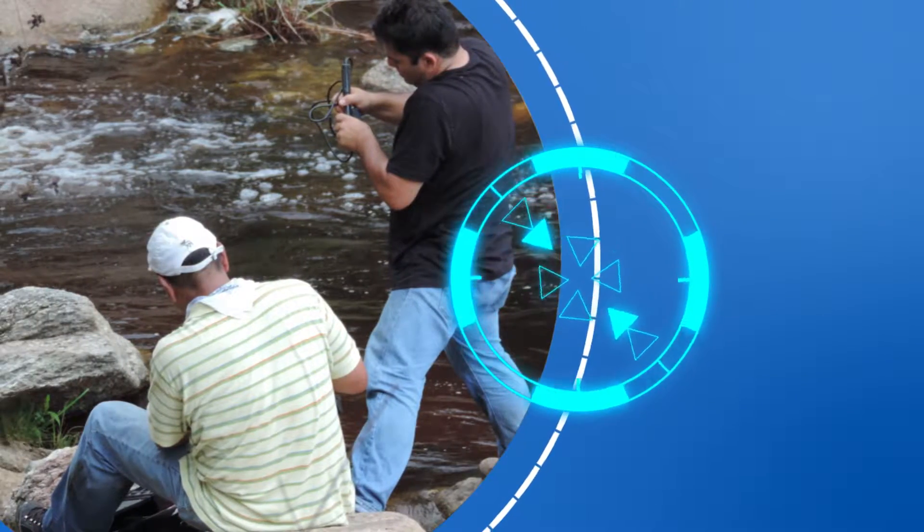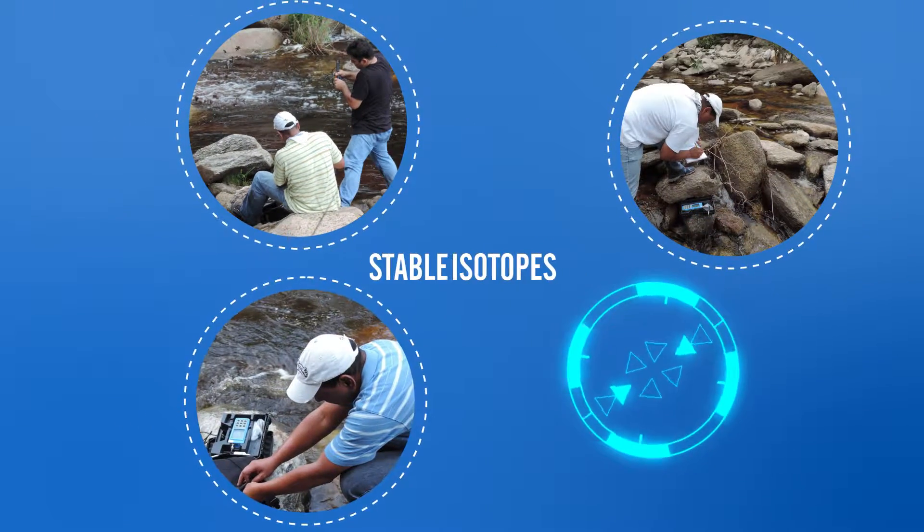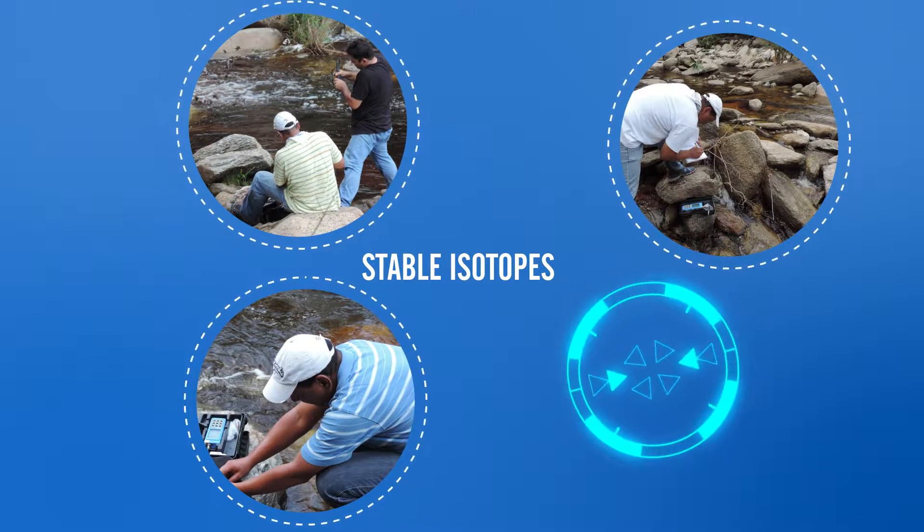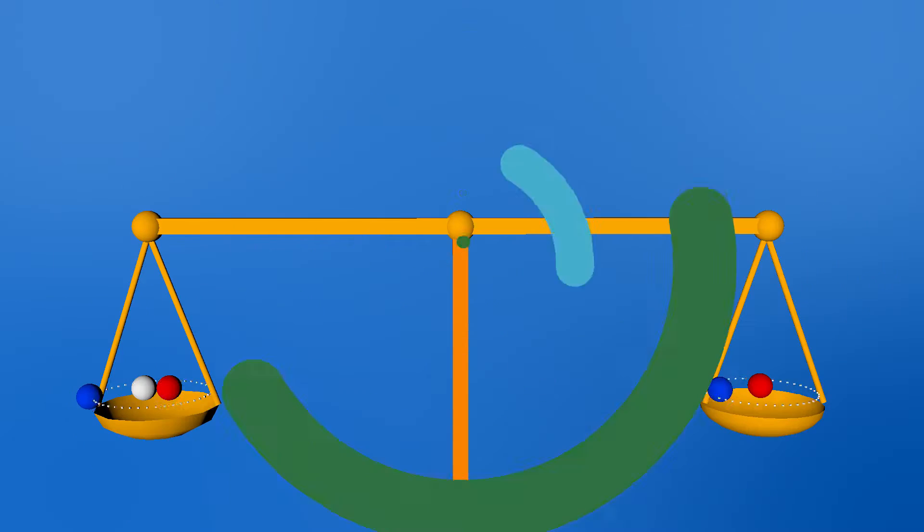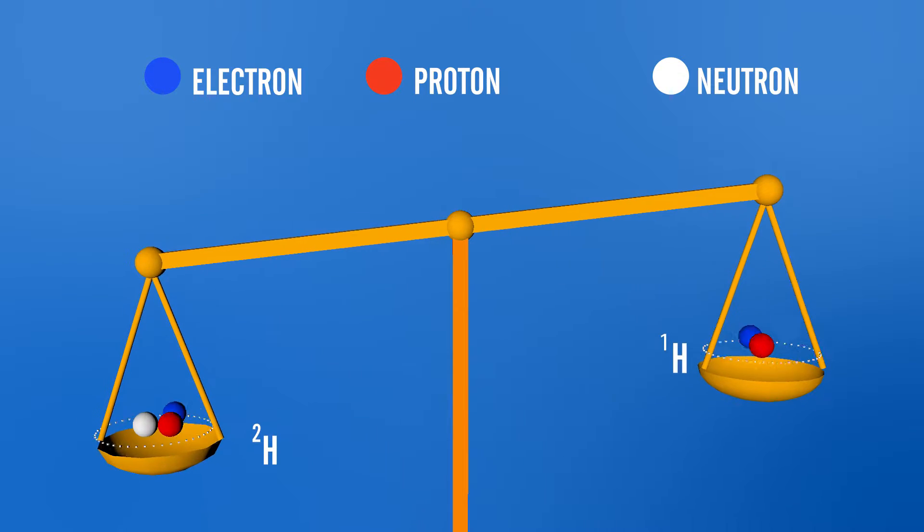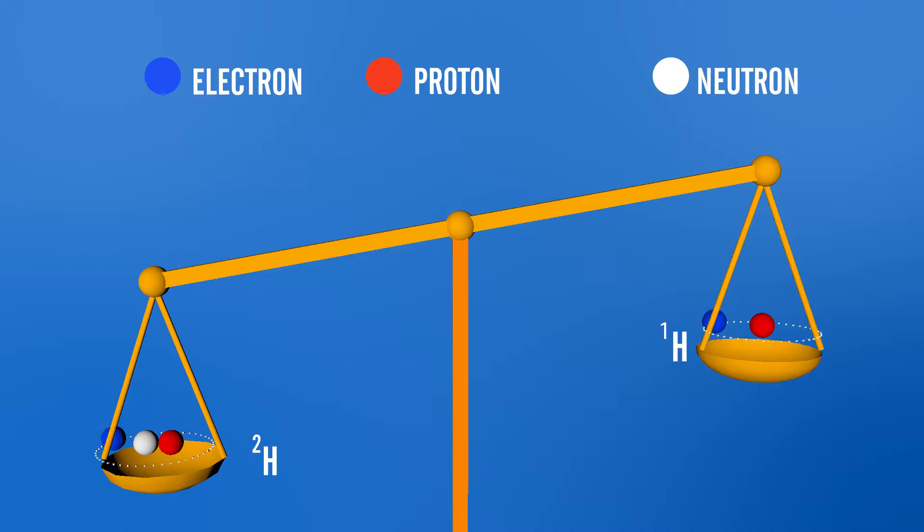This technique is based on measuring stable isotopes. Let's remember what an isotope is. These are atoms of the same chemical element, but their nuclei have a different quantity of neutrons. Therefore, one is heavier than the other.